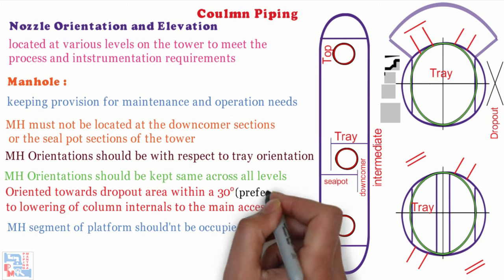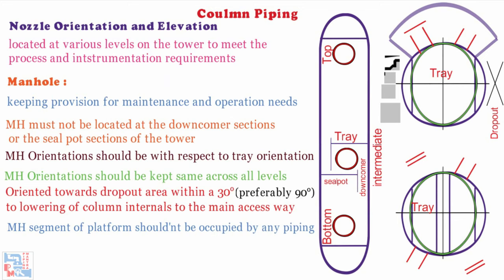Manholes should be preferably oriented perpendicular to the downcomer. Where internal piping is arranged over a tray, manholes shall be provided but it should be ensured that the internals do not block the maintenance access through the manhole.